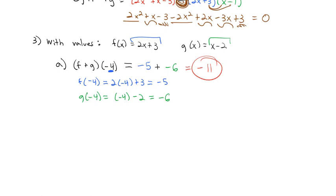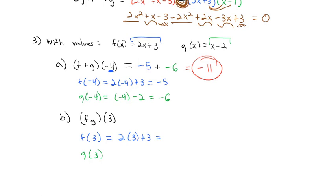In a way it's almost easier when we have a value, because we just plug that value into both functions and then do the operation. Let's try (f · g)(3). We need f(3) and g(3), then multiply those results. Plugging 3 into f: f(3) = 2(3) + 3 = 6 + 3 = 9. Plugging 3 into g: g(3) = 3 − 2 = 1. So (f · g)(3) = 9 × 1 = 9.